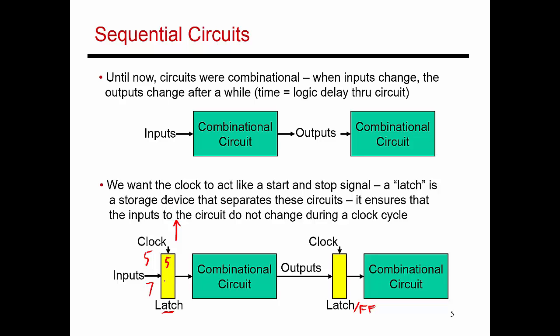So I captured the values 5 and 7, and then those captured values don't change for the next entire clock cycle. This combinational circuit sees a very stable set of inputs 5 and 7, does whatever it needs to do, so maybe it's doing an add and producing the result 12.